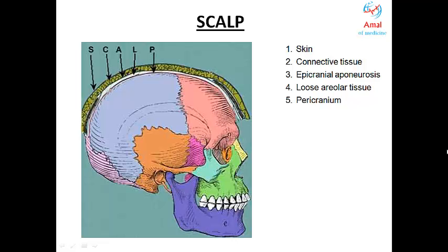Before discussing head injuries during birth, we'll have a quick review of scalp anatomy. The five layers of the scalp can be remembered using the mnemonic SCALP: S for skin, then connective tissue, then aponeurosis, then loose areolar tissue, and then pericranium. The first three layers act as a single unit, moving over the fourth layer, the loose areolar tissue. Also keep in mind that the pericranium is usually adherent to the scalp.